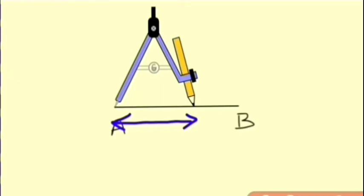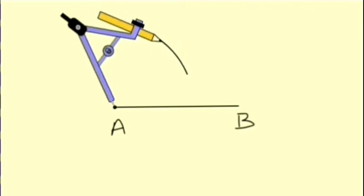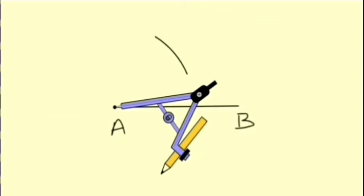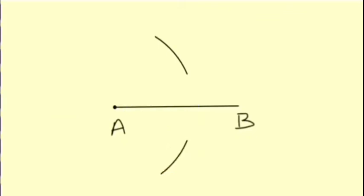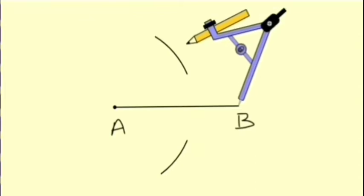Now using this as the radius, I will draw two arcs, one above AB and one below AB. You can see these two arcs. Keeping the radius same, I will now take point B as center.